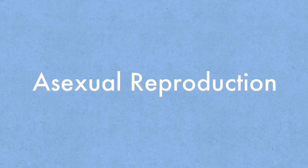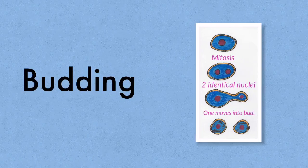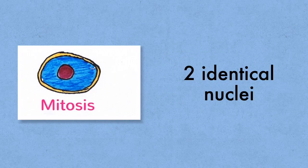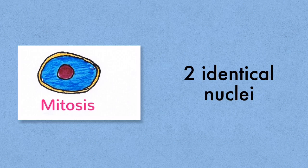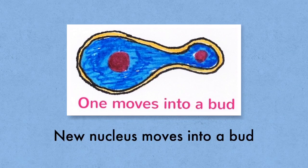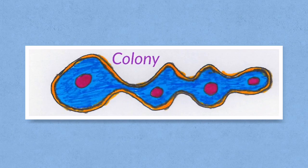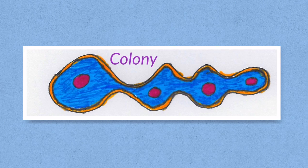Yeast reproduces by means of asexual reproduction. This method is known as budding. It begins with a yeast cell undergoing mitosis to produce two identical nuclei. One of these new nuclei moves into a bud. It either nips off producing two identical separate yeast cells or if it doesn't nip off it forms a colony.